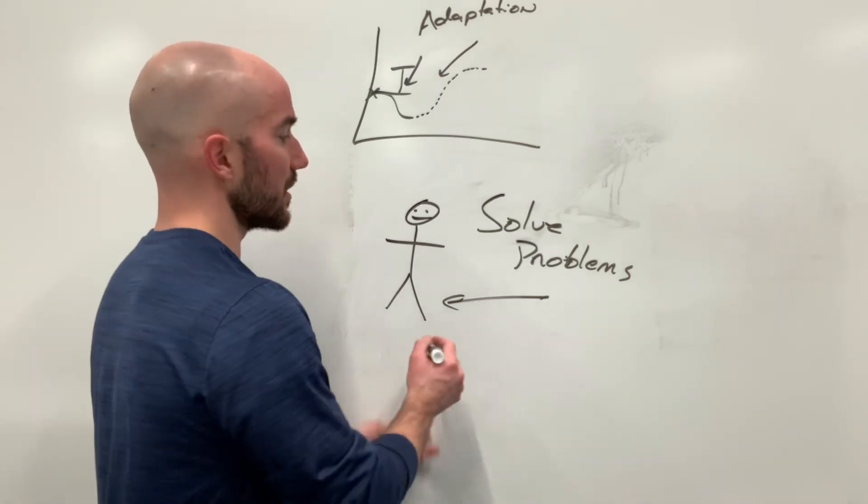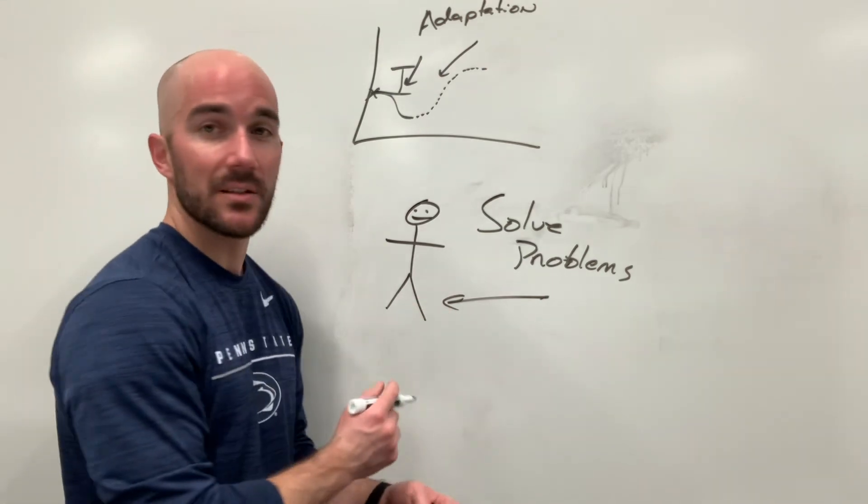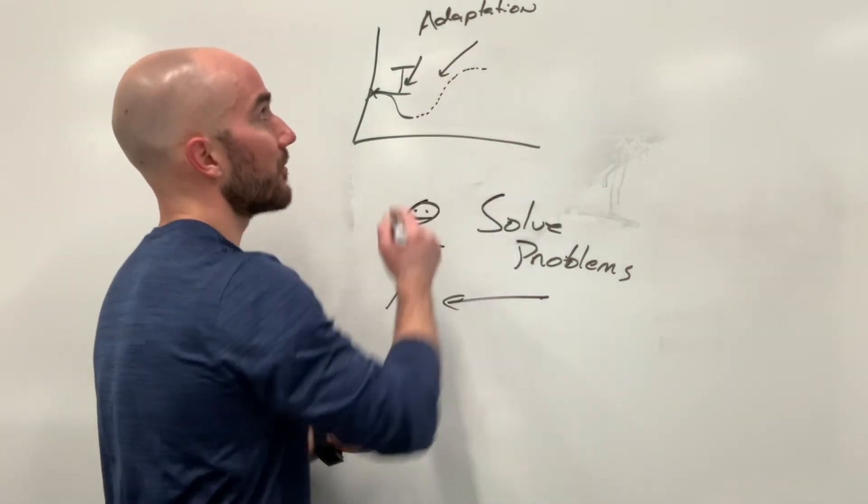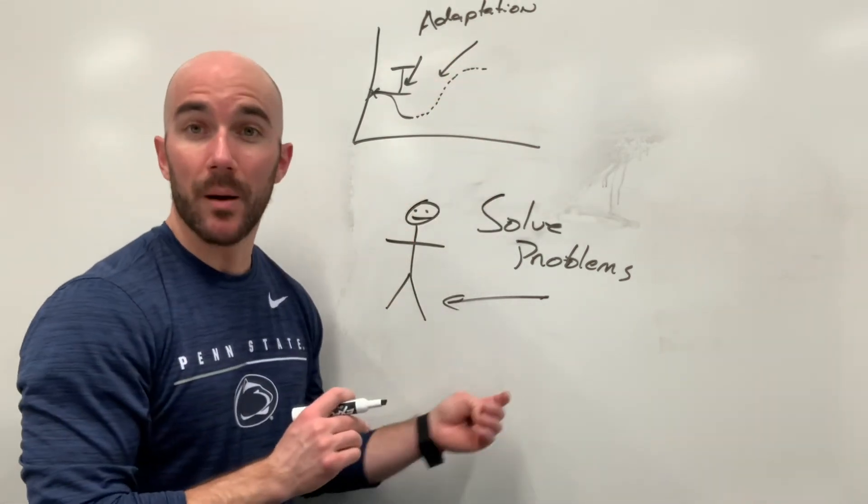So we're essentially forcing adaptation from a problem-solving lens. Two different types of adaptation: we've got physiological adaptation and problem-solving adaptation.